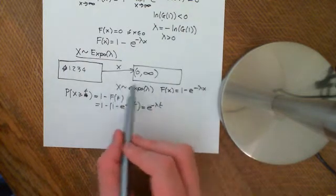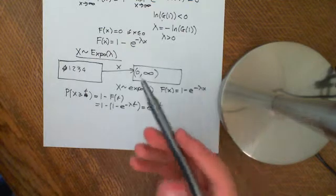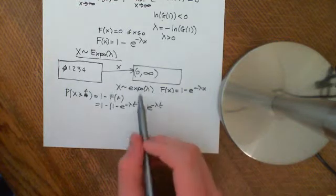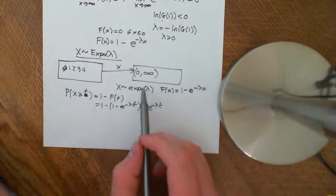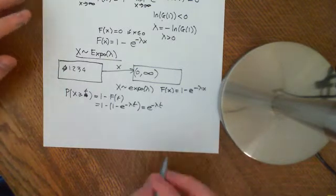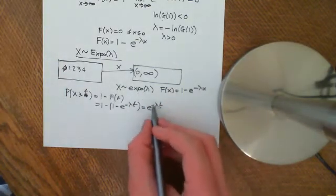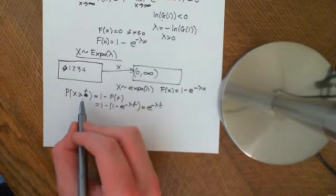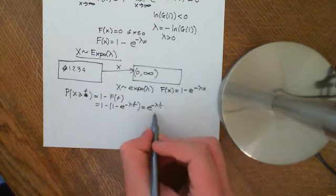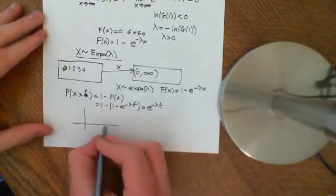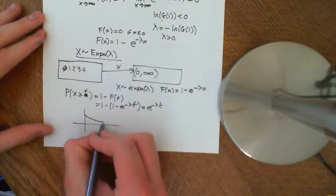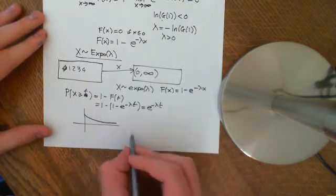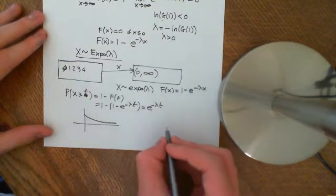We're going to assume it is perfectly distributed in this way. The survival function — the chance that you live greater than or equal to t years — is e to the negative lambda t. If we plot this, it gets gradually smaller and smaller as you go up the years. The problem is that the memoryless property holds for the exponential distribution.